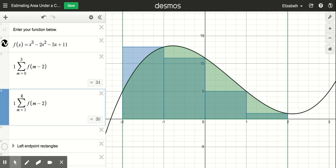So now I can kind of guess that the actual shaded area here in green is somewhere between 30 and 34.